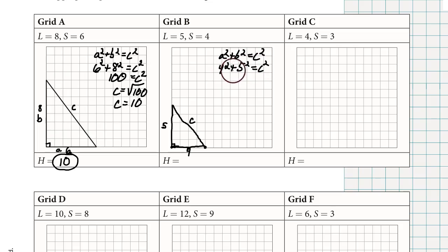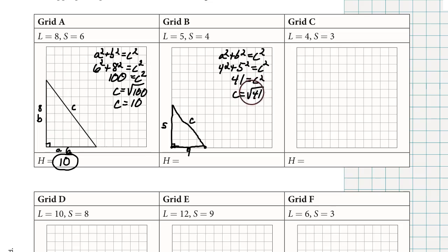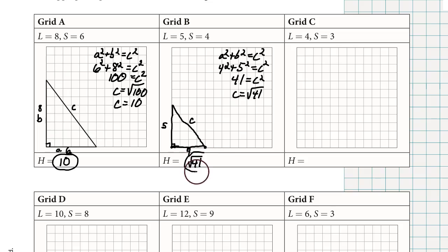16 plus 25 is 41, so C equals the square root of 41. We could express this as a decimal if we wanted. Right underneath the picture where it says H equals, we'll write the square root of 41. I'm going to pause the video at this point for you to work on grids C, D, E, and F.